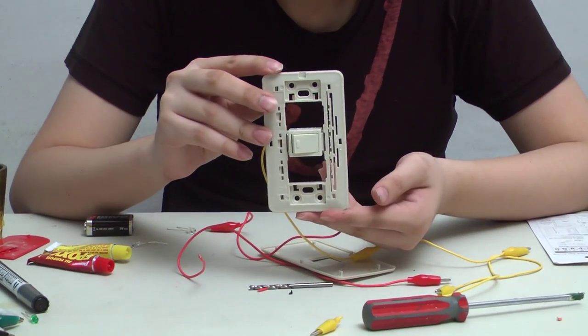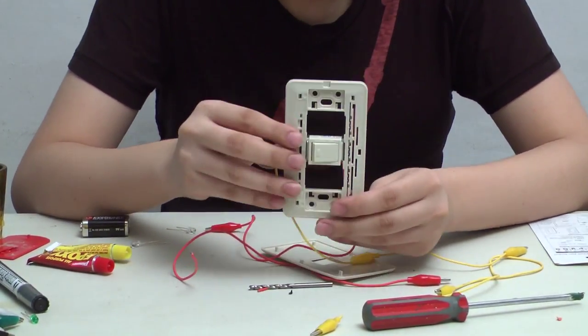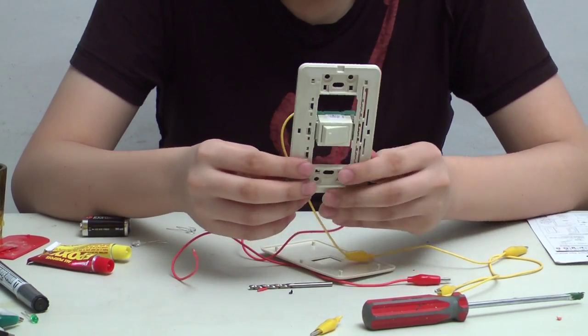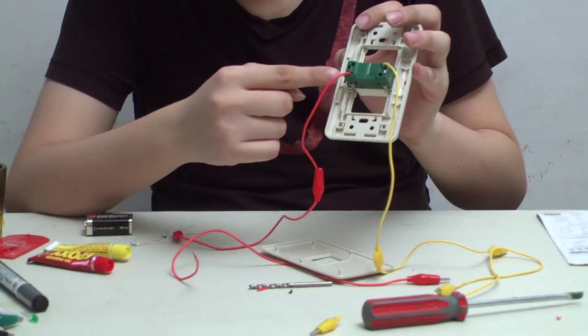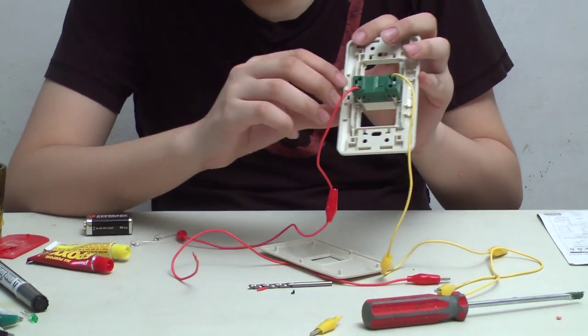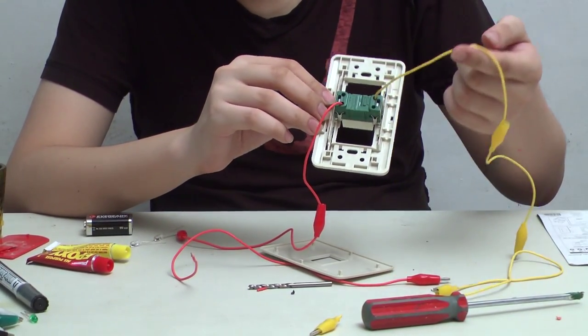Next, we rig the light switch. I used two alligator clips for this light switch. At the back, we have this red connector to connect to the bulb, and this yellow wire to connect to the battery.